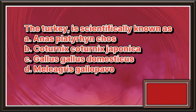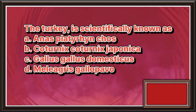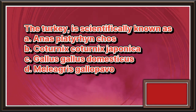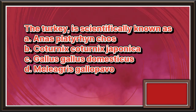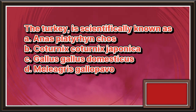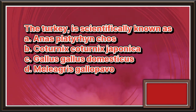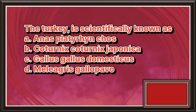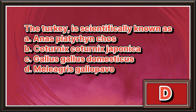The turkey is scientifically known as: A. Anas platyrhynchos. B. Coturnix coturnix japonica. C. Gallus gallus domesticus. D. Meleagris gallopavo. The answer is letter D.